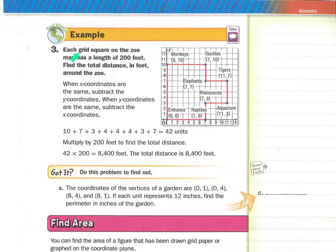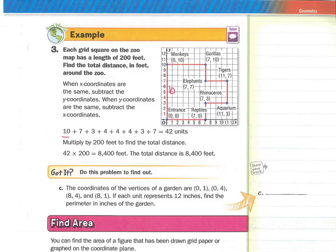Let's do another example. Each grid square on the zoo map has a length of 200 feet — that means each square represents 200 feet. Find the total distance in feet around the zoo. We're looking for the perimeter of this entire shape. When the x-coordinates are the same, subtract the y. When the y-coordinates are the same, subtract the x. The distance along the first side — x-coordinates are the same — so we subtract the y-coordinates and get 10. This is a side length of 10. Going from here to here, the y-coordinates are both 10, so we subtract 7 minus 0 and get a side length of 7.